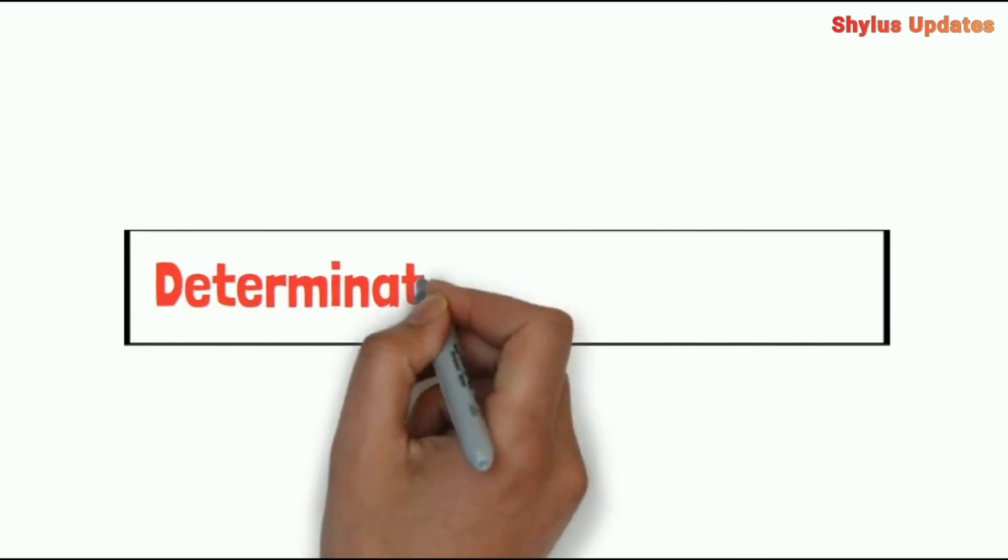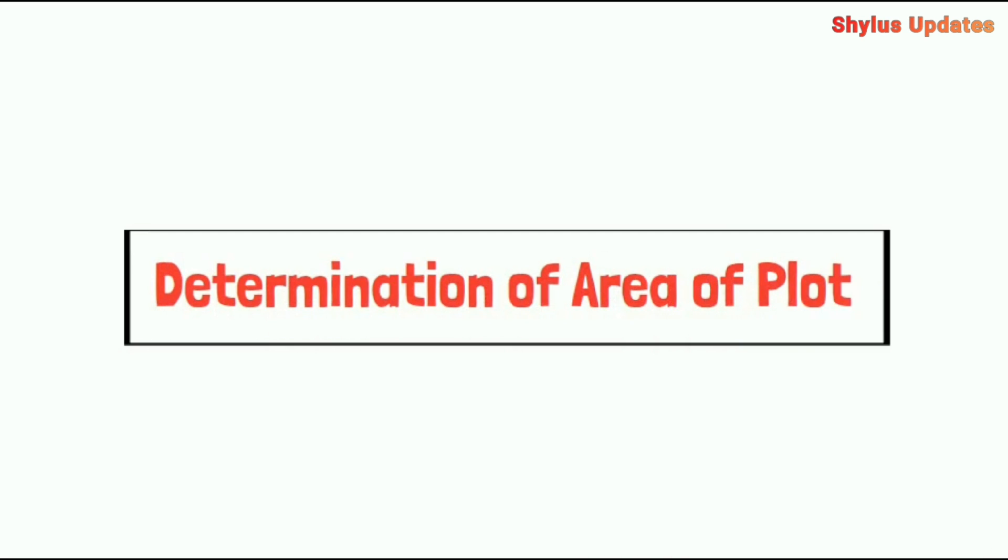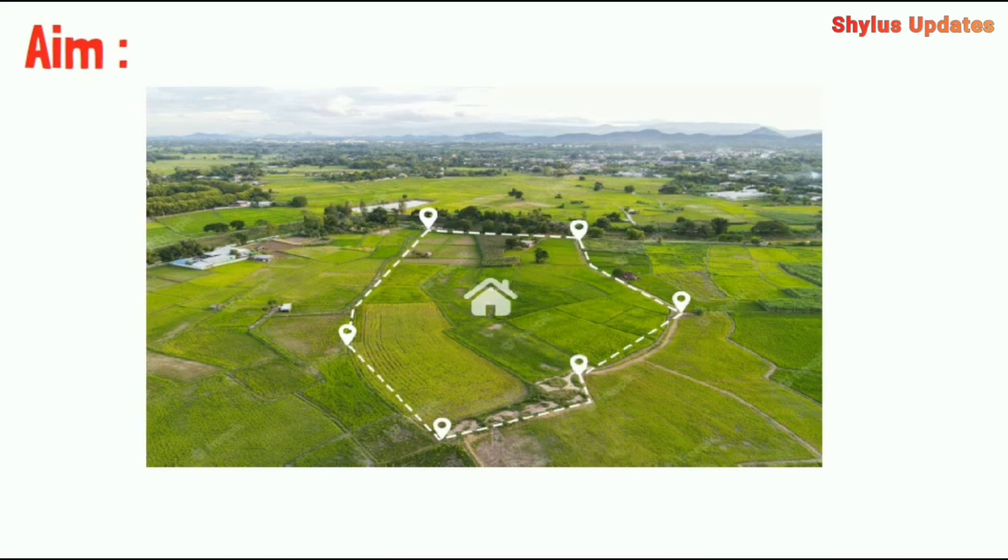Hello everyone, welcome to Civil Engineering Shylus Updates. Determination of area of plot. Aim: to determine the area of given plot by conducting chain survey.